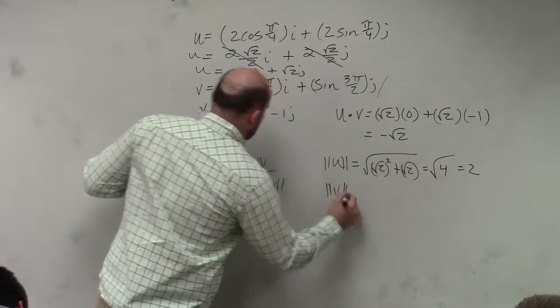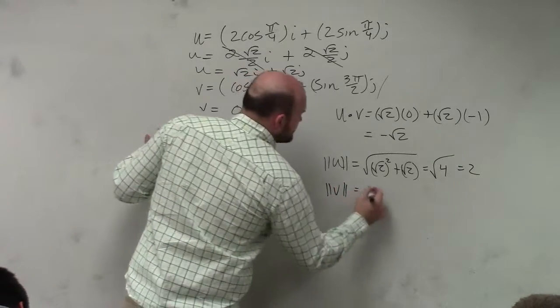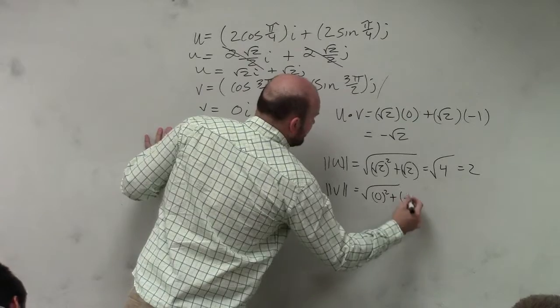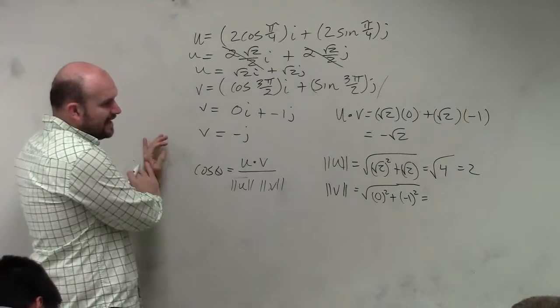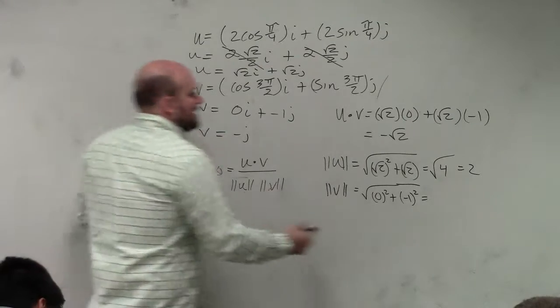Magnitude of v is basically going to be the square root of 0 squared plus negative 1 squared. Which, Hunter, when I do this, I get negative 1 squared is 1. Square root of 1 is 1.